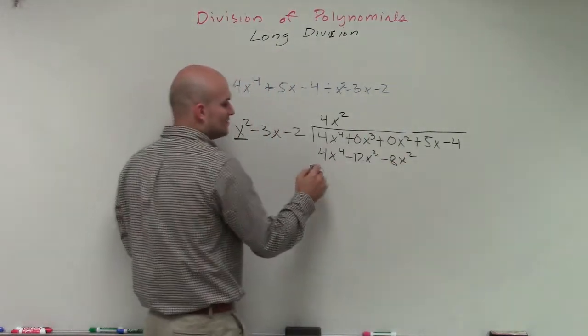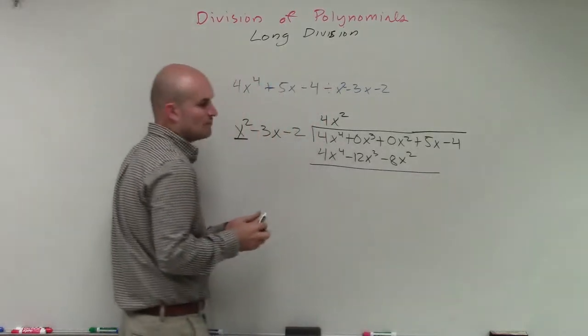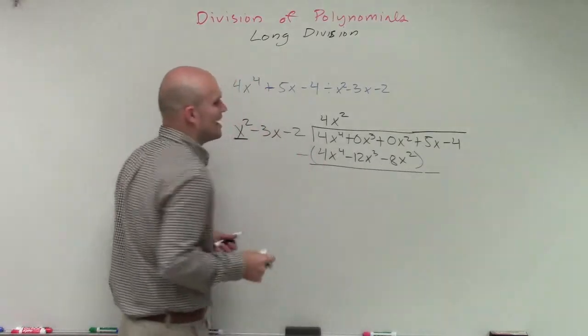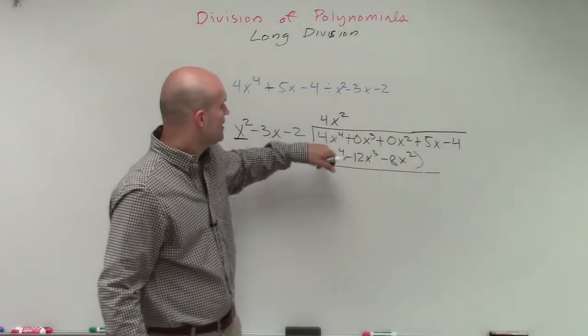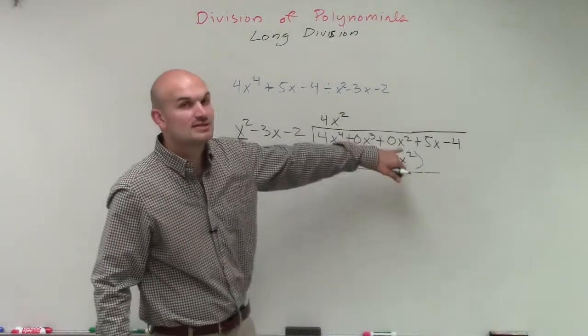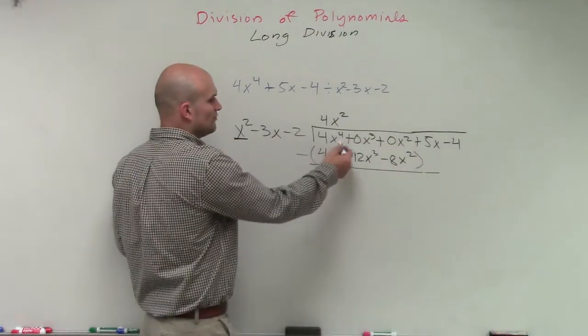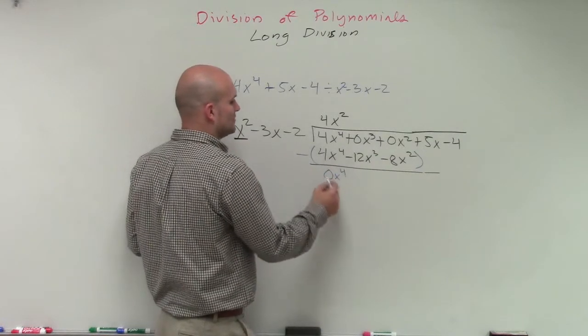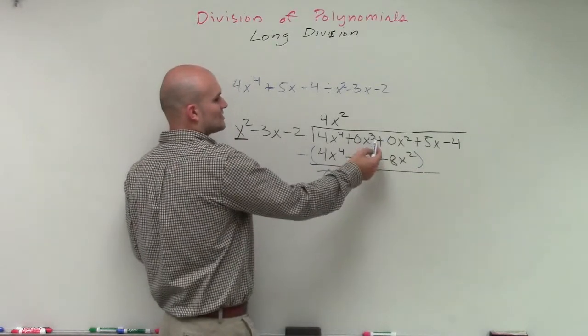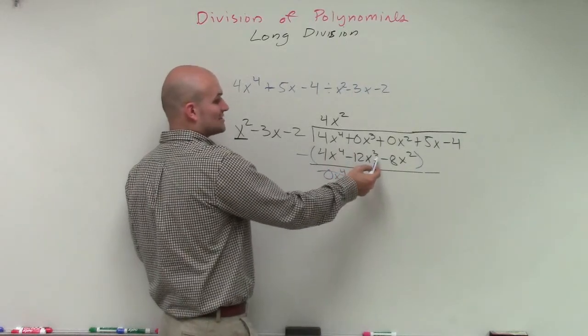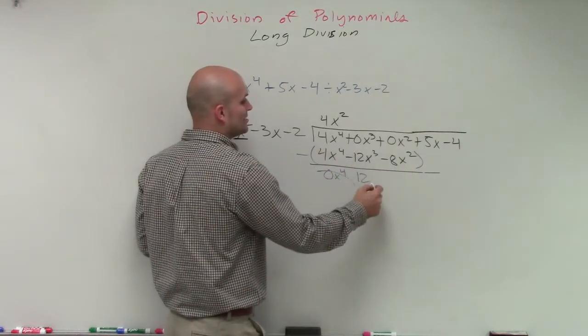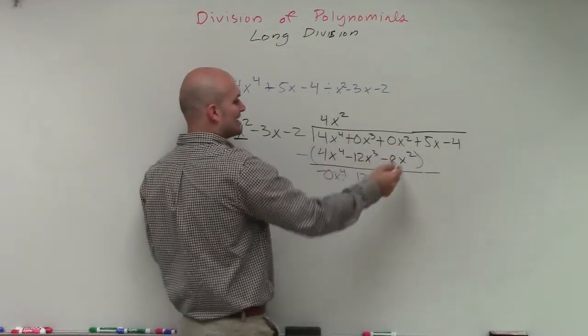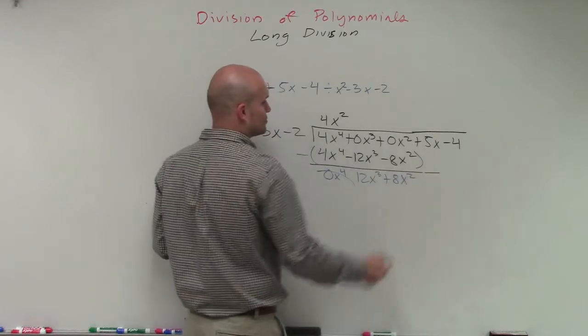And it's just kind of nice to see these place values over here because when we subtract, we want to know what are we subtracting it from. So again, we put them in parentheses and we subtract. So we need to make sure we subtract each one of these terms from our top row. So 4x to the fourth minus 4x to the fourth is 0x to the fourth. 0x cubed minus a negative 12x cubed is going to be a positive 12x cubed. 0x squared minus a negative 8x squared is going to be a positive 8x squared.